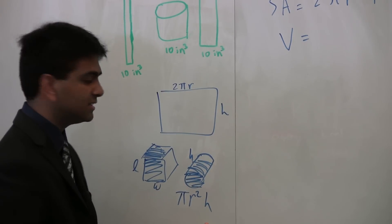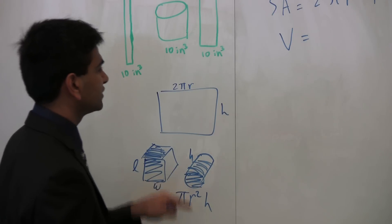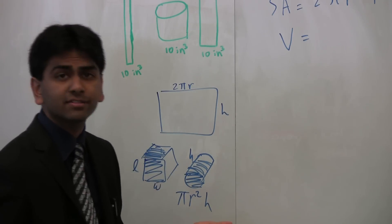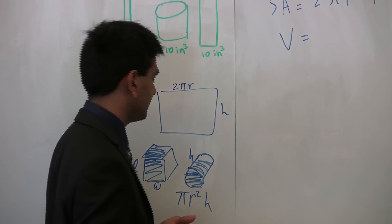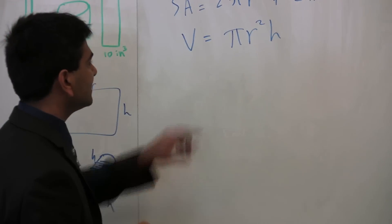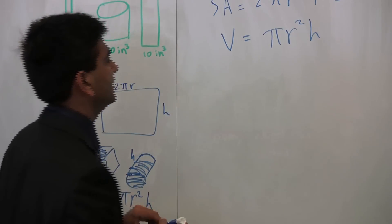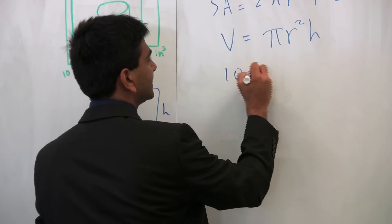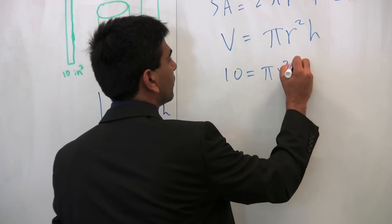So pi r squared h is the formula for the volume of a cylinder. These are just easy ways to derive them from scratch, in case you ever forget them. So pi r squared h. So we are given that this has to equal, in fact, 10.